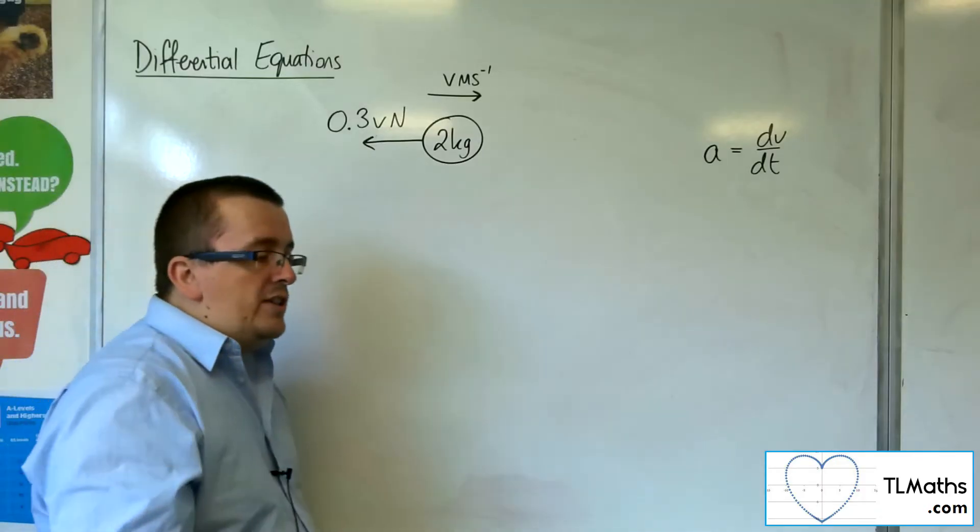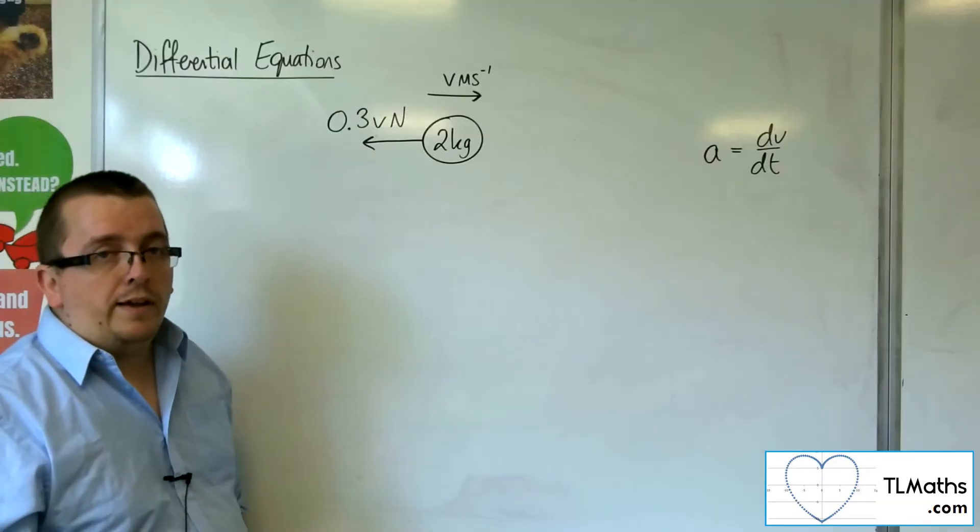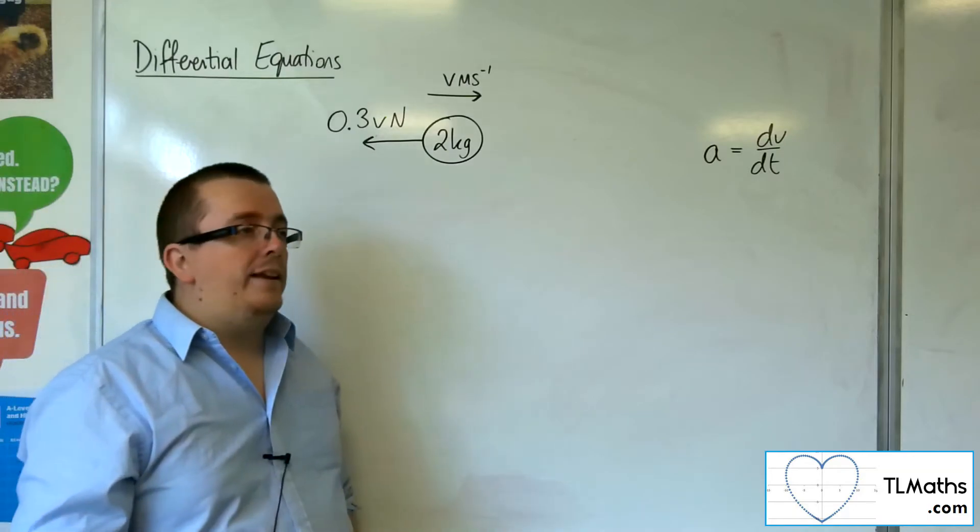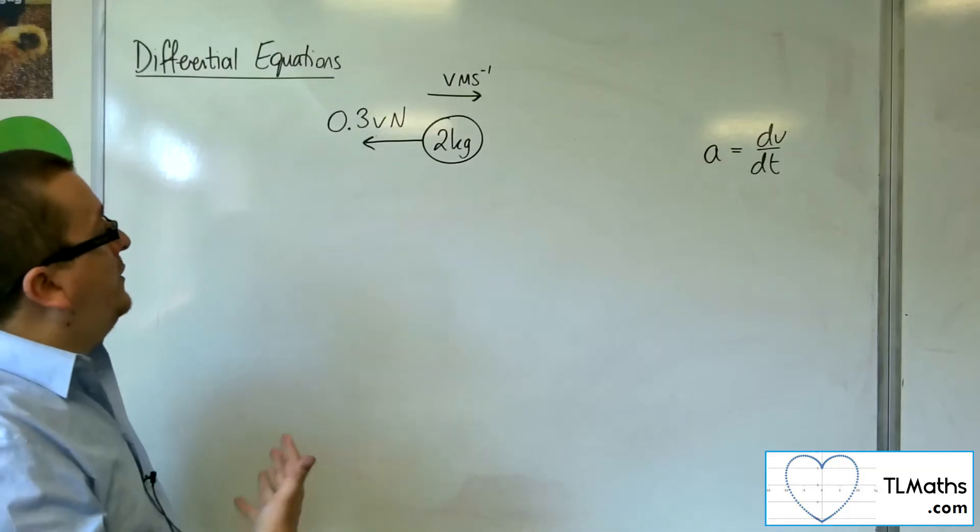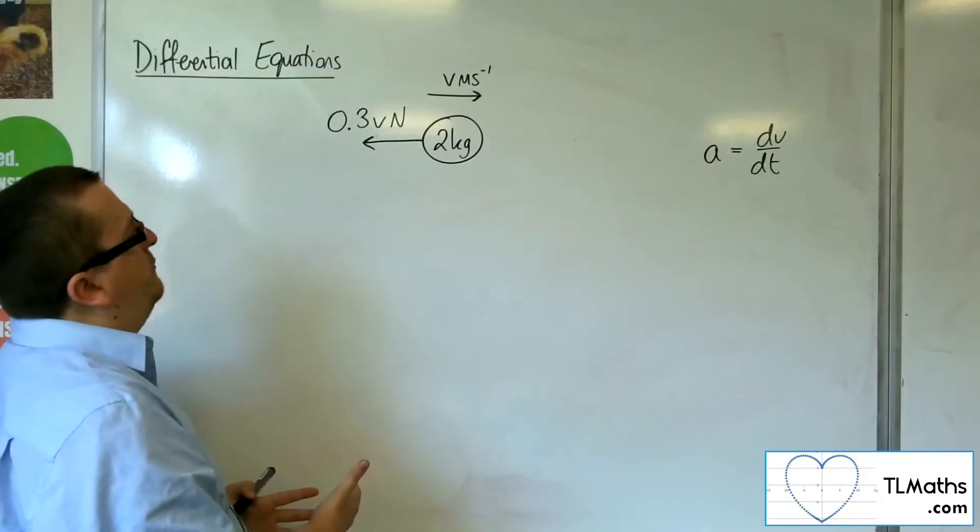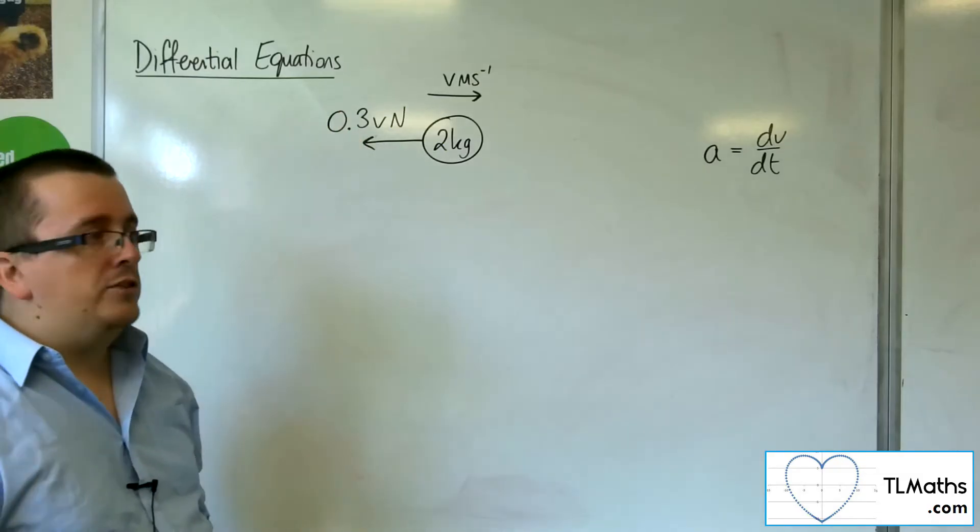So its resistive force is changing depending on how fast the particle is travelling. And that is actually something that is quite common as a mechanics situation. So it makes sense then that rather than having a constant resistive force, the resistance force is changing depending on the velocity of the particle.